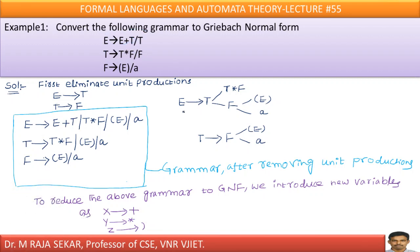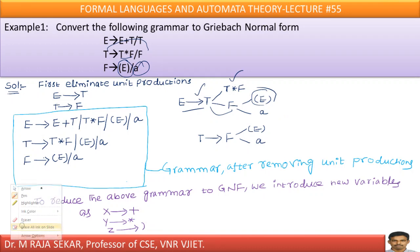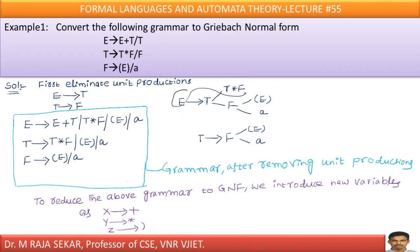How can I remove? Let me write E goes to T. What are the possible productions for T? There is a production T goes to T star F, and another production T goes to F. Therefore, I am writing T goes to F. Whereas F goes to left parenthesis E right parenthesis, and F also goes to A. I can write, in the place of E goes to T: E goes to T star F, E goes to left parenthesis E right parenthesis, E goes to small a. I am getting three new productions.